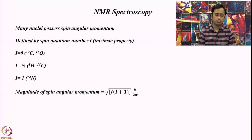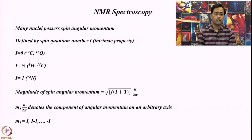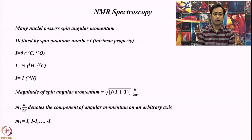The magnitude of the spin angular momentum is given by √(i(i+1)) · (h/2π), whereas the value m_i can range from +i to −i, and m_i · (h/2π) defines the component of the angular momentum on an arbitrary axis.